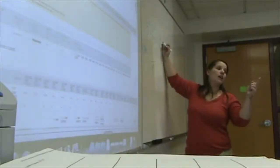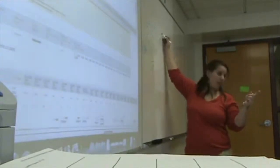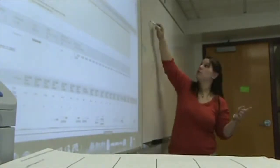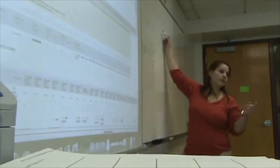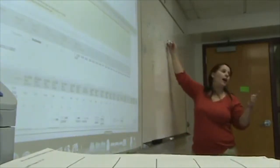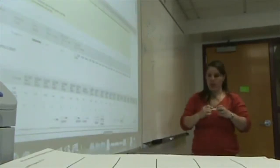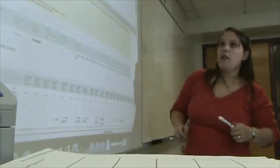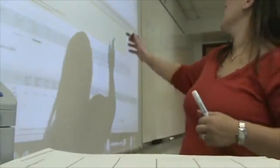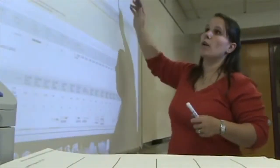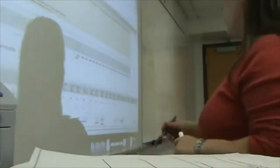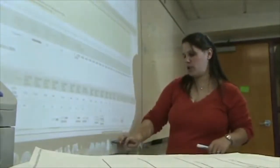3 to the negative 10th. Right? Because negative 2 plus negative 8 is negative 10. Or should we write as 1 over 3 to the 10th? Okay? That was number 4, I believe. How many questions were there? 20. That was number 4.